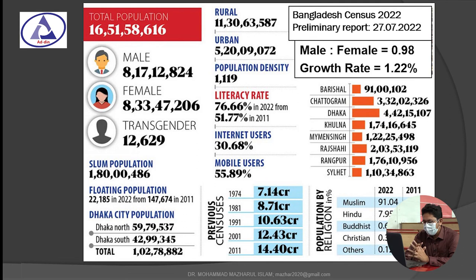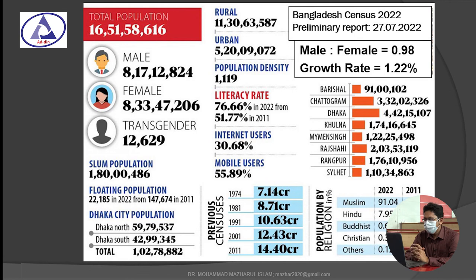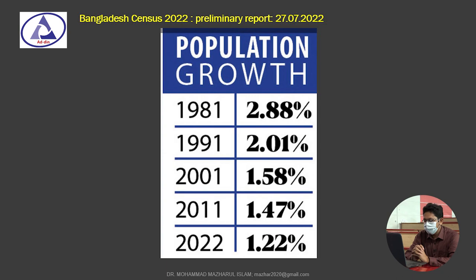Internet users account for 30.68 percent and mobile phone users 55.89 percent — important findings from Bangladesh census 2022. From 1981 to 2022, the population growth rate has been steadily declining: 2.88 percent in 1981, 2.01 percent in 1991, 1.47 percent in 2001, and 1.22 percent in 2022. This concludes the census lecture.